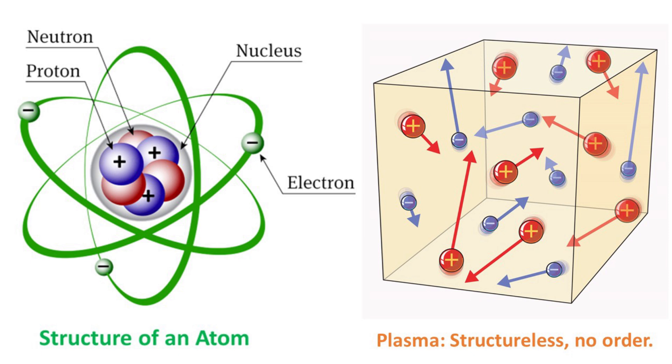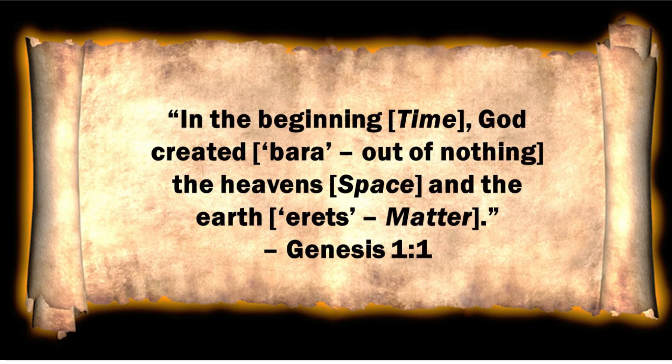From this slide, it is apparent that atoms have a formal structure, as on the left. But plasma, as in the right-hand image, does not. This raises an interesting point. Genesis 1:1 says that in the beginning—time—God created, barah, literal Hebrew, out of nothing, the heavens—space—and the earth, erex in Hebrew, which means that which is firm, or more basically matter.